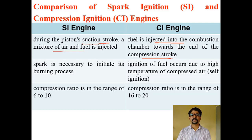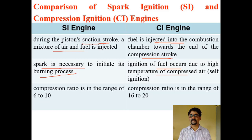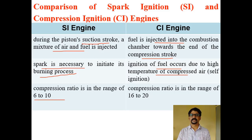In SI engines, a spark is necessary to initiate burning — hence the name spark ignition. In CI engines, ignition of fuel occurs due to the high temperature of the compressed air, called self-ignition, because when the air temperature at the end of the compression stroke exceeds the self-ignition temperature, the fuel burns by itself using surrounding oxygen. The compression ratio for petrol engines ranges from 6 to 10, whereas for diesel engines it ranges from 16 to 20. That is why diesel engines are high compression ratio engines and petrol engines are low compression ratio engines.